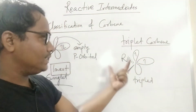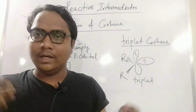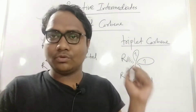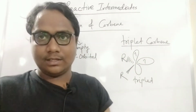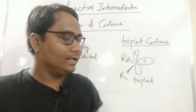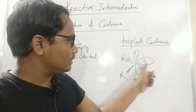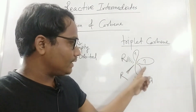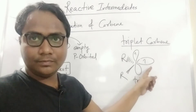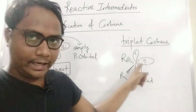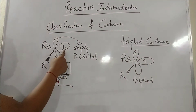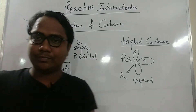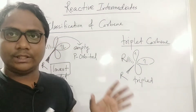Some exam questions — in PSC or other competitive exams — ask about the spin or orbital of triplet carbene. Triplet carbene has both electrons with the same spin direction but in different orbitals: one in an sp orbital and one in a p orbital. In singlet carbene, both electrons are in the sp orbital with different (paired) spins, and the p orbital is empty.